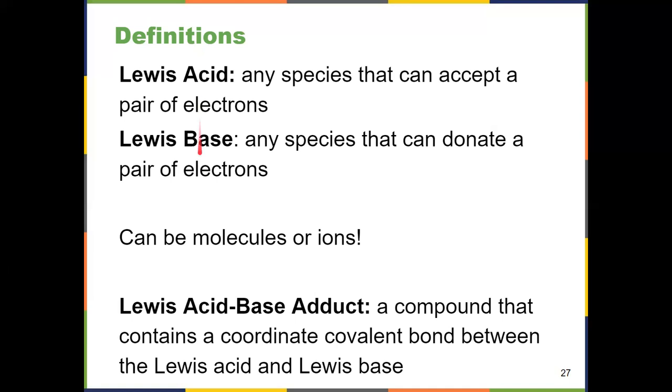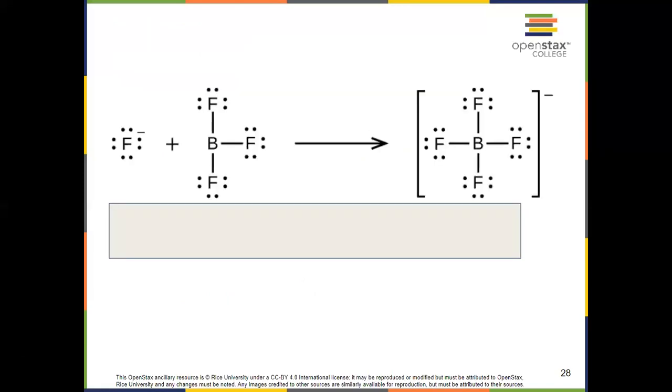When those two come together, the product that's formed is known as a Lewis acid-base adduct. So a compound that contains a coordinate covalent bond that was newly formed between a Lewis acid and a Lewis base. So let's look at a couple of examples to determine those.